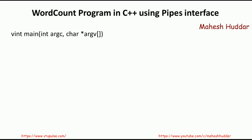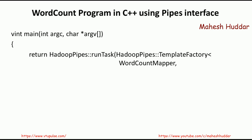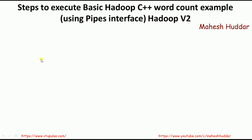The main part of the program looks like this. We use HadoopPipes and pass the mapper function and reducer function as inputs to runTask. These two are given as input to runTask, it executes the program, and the result is returned. This is how the word count program in C++ looks using the Pipes interface.